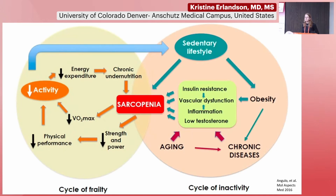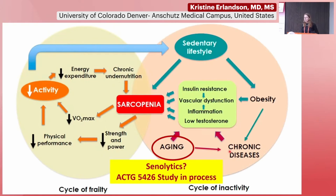I wanted to focus on a couple of mechanisms and potential treatments particularly relevant to people with HIV. This figure shows different mechanisms contributing to sarcopenia. Aging is certainly a big component, as is the contribution of chronic diseases — which may include HIV — and then certainly a major contribution of lifestyle factors such as a sedentary lifestyle and obesity. Together, obesity, chronic diseases, and aging may all contribute to insulin resistance, inflammation, and low testosterone. One potential way to treat sarcopenia would be through an agent that targets all of these different hallmarks of aging.